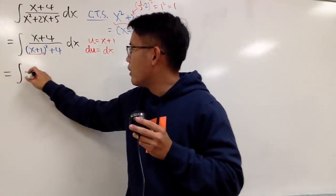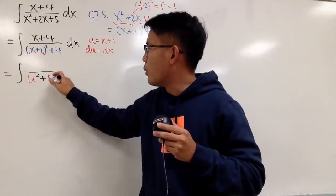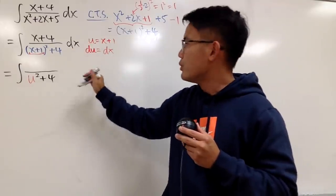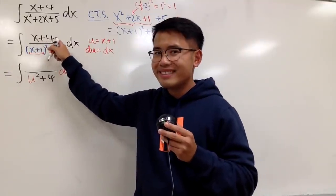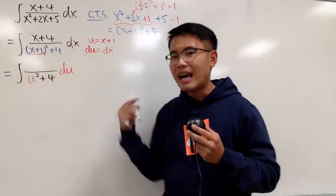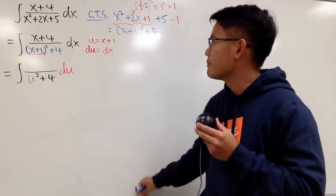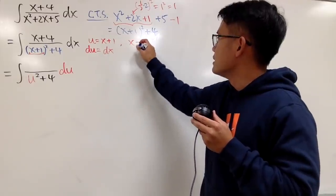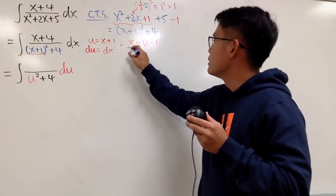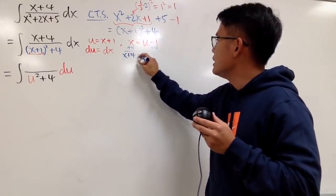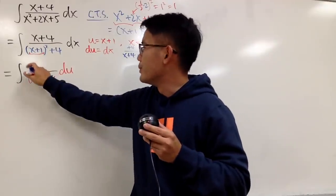Now let's set up the integral. For the denominator, we substitute u, so we have u squared plus 4. And since dx equals du, I'll write du. Everything in the denominator is now in u. But I haven't handled the top yet — we have x, which has to be changed to u. Since u equals x plus 1, I subtract 1 from both sides: x equals u minus 1. But I want x plus 4, so I add 4 to both sides: x plus 4 equals u minus 1 plus 4, which is u plus 3. So I put u plus 3 on the top.